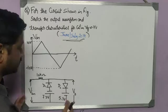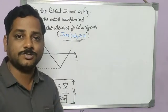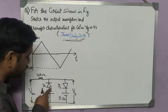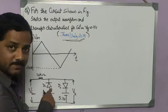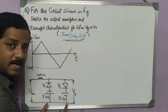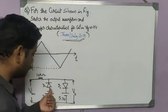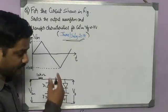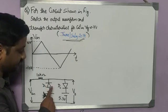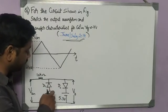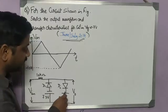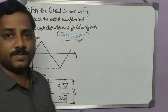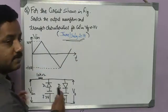First, look into this circuit. The very first step is we need to find the voltage available at these terminals. Here we have two diodes connected in parallel, so it is called a dual clipper or a double clipper. We need to find the voltage at this point as well as the voltage at this point. To do that, let us take an equivalent circuit.